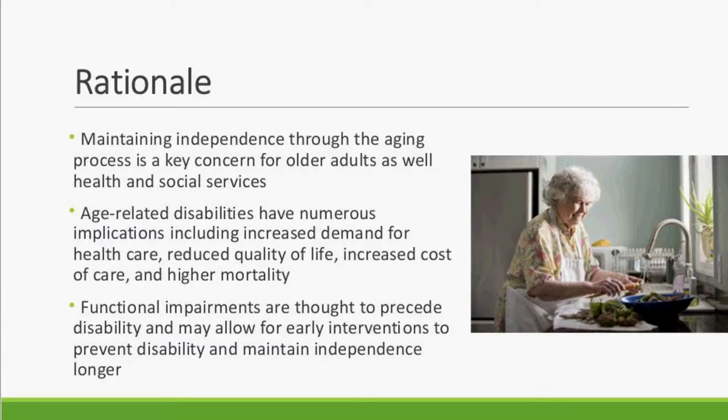The rationale for this project was straightforward. Maintaining independence throughout the aging process is a key concern for older adults, as well as health and social services. Age-related disabilities have numerous implications, such as increased demand for healthcare, reduced quality of life, increased cost of care, and higher mortality. There's been a big emphasis on finding ways to keep people from becoming disabled and living independently. Research has focused on functional impairments because they're thought to precede disability, allowing for early interventions to prevent or delay it.